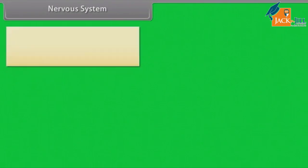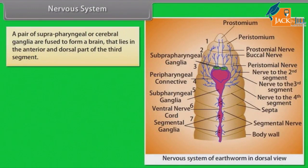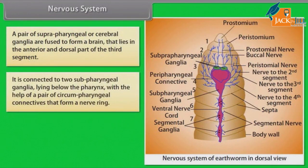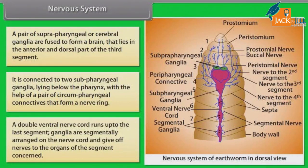Nervous System: A pair of supra-pharyngeal or cerebral ganglia are fused to form a brain that lies in the anterior and dorsal part of the third segment. It is connected to two sub-pharyngeal ganglia lying below the pharynx by a pair of circum-pharyngeal connectives that form a nerve ring. A double ventral nerve cord runs up to the last segment. Ganglia are segmentally arranged on the nerve cord and give off nerves to the organs of the segment concerned.